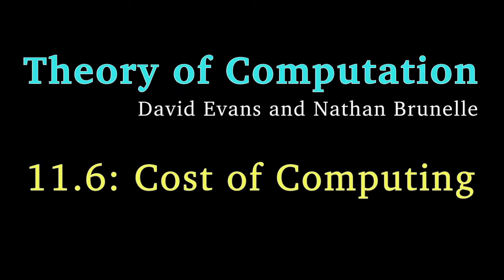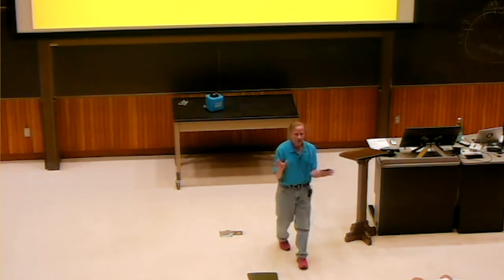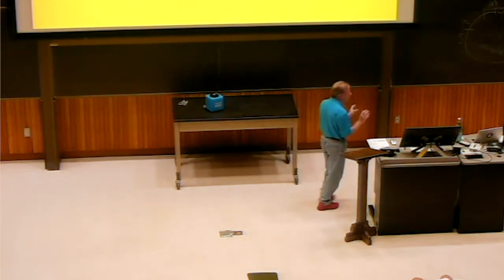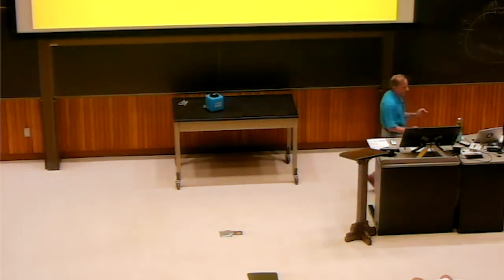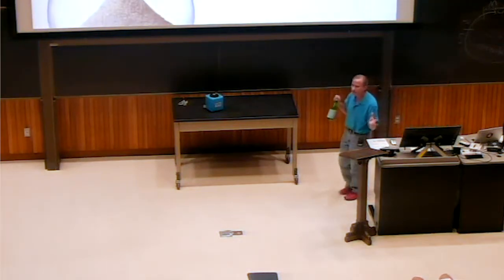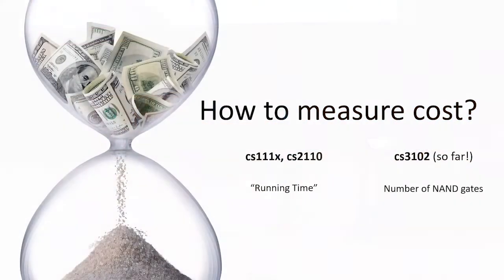How does this relate to what we actually care about? There's a theorem that says some functions seem expensive — but expensive here means the size of the circuit. What we really should care about is cost. How do you measure cost? We've measured cost so far today as the number of lines in a NAND circuit program.